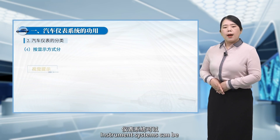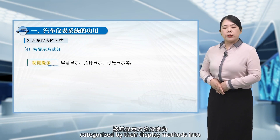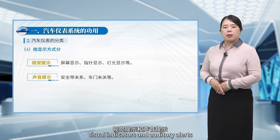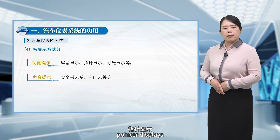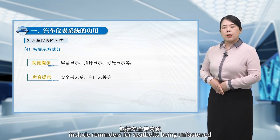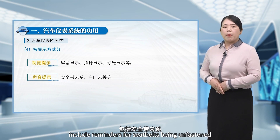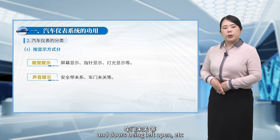Instrument systems can be categorized by their display methods into visual indicators and auditory alerts. Visual indicators include screen displays, pointer displays, and indicator lights. Auditory alerts include reminders for seat belts being unfastened, doors being left open, etc.